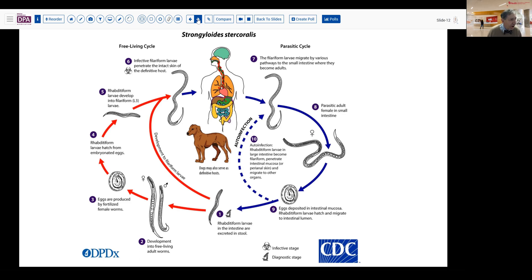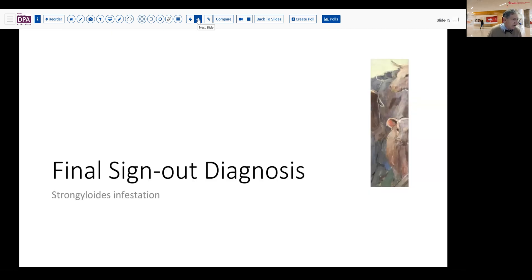So in summary, our sign-out diagnosis is strongyloides infestation. And there are certain endemic areas where this is more commonly encountered, southeastern U.S. and subtropical regions where the soil temperatures are warm. But it's also been detected in various institutionalized patients. It's not completely clear how the manner of transmission is there, whether there's a patient-to-patient transfer or not.